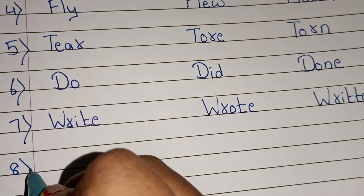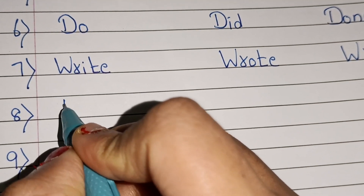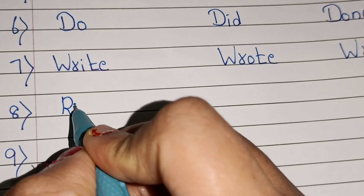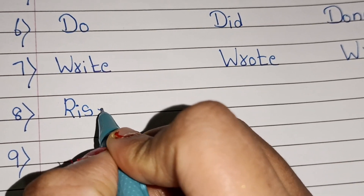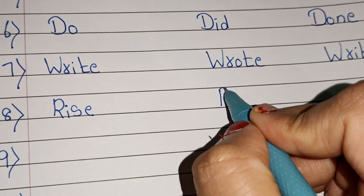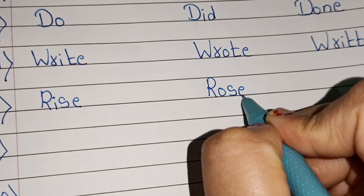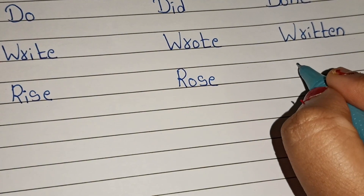Eighth: rise — verb 1; rose — verb 2; risen — verb 3.